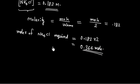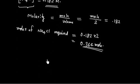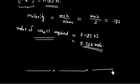The desired buffer will have a pH of 9 and moles of NH4Cl required is 0.364.